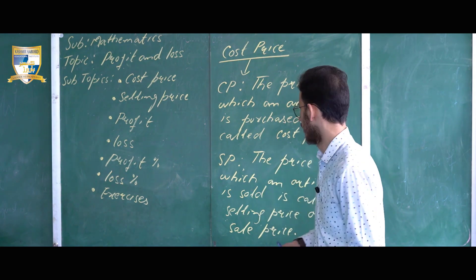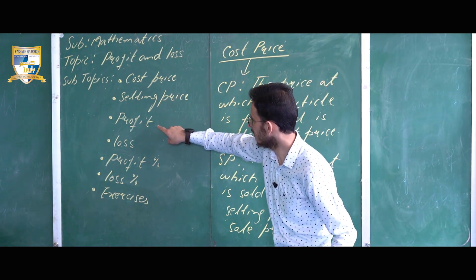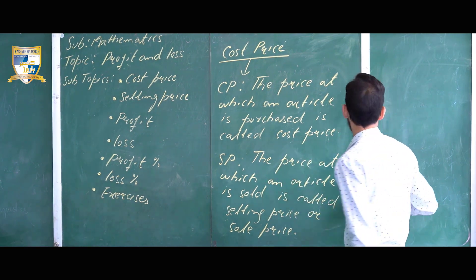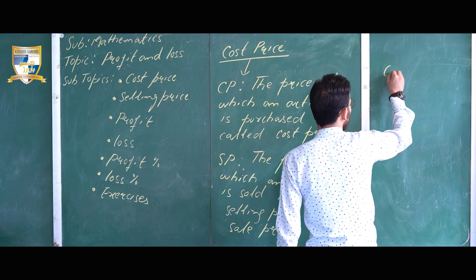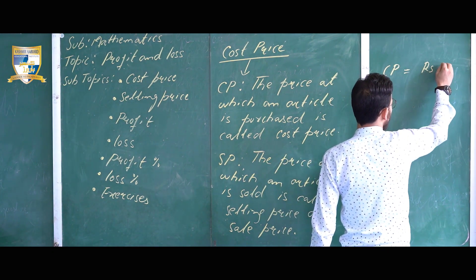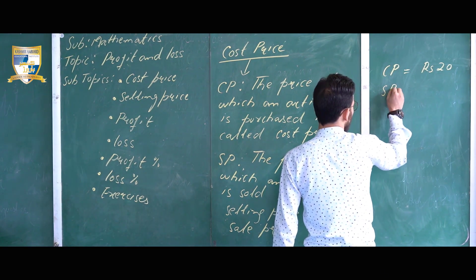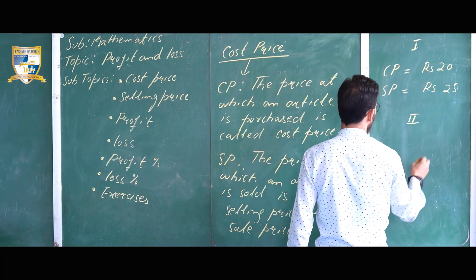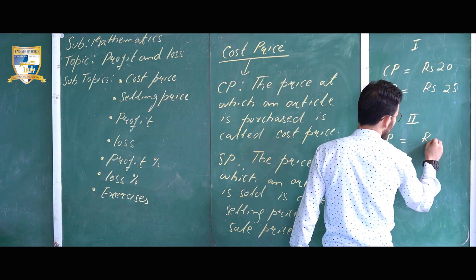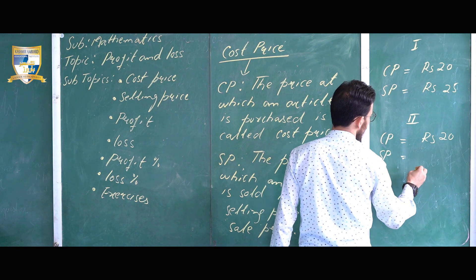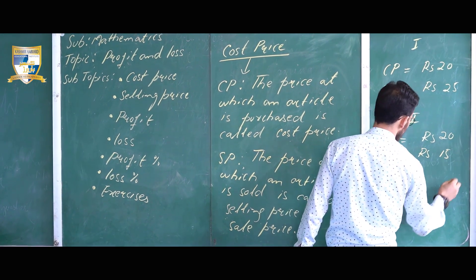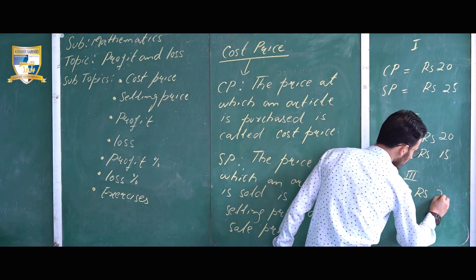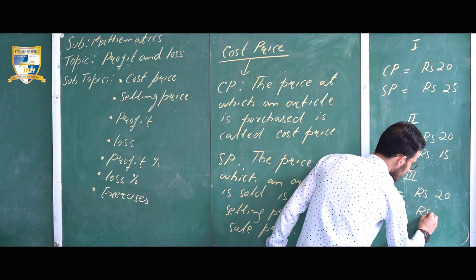Based on these two prices, we understand what is profit and what is loss. I'm giving you three situations. Situation one: I bought this pen at rupees 20 and sold it at rupees 25. Situation two: I purchased it at rupees 20 and sold it at rupees 15. Situation three: I purchased it at rupees 20 and sold it at rupees 20.